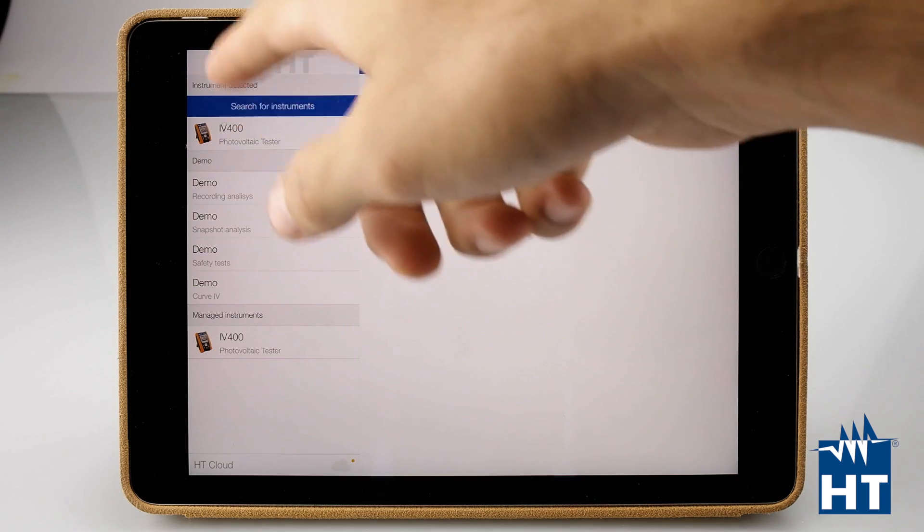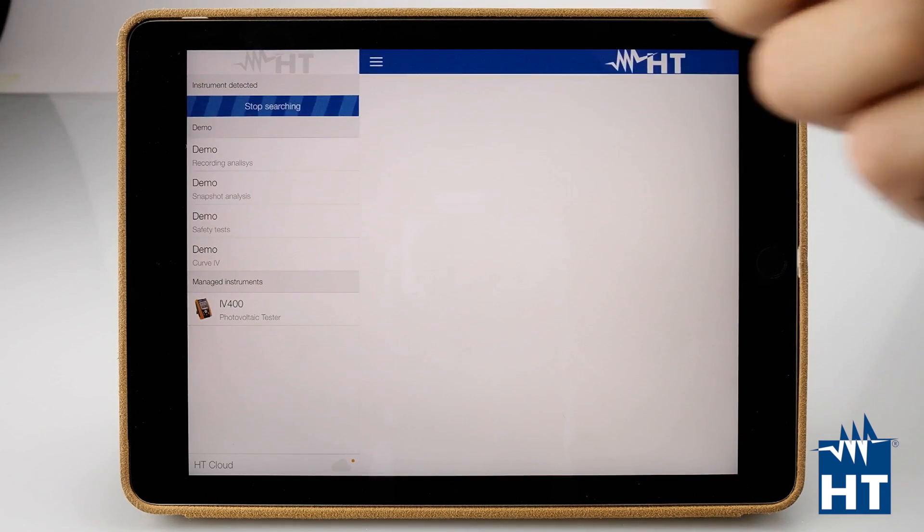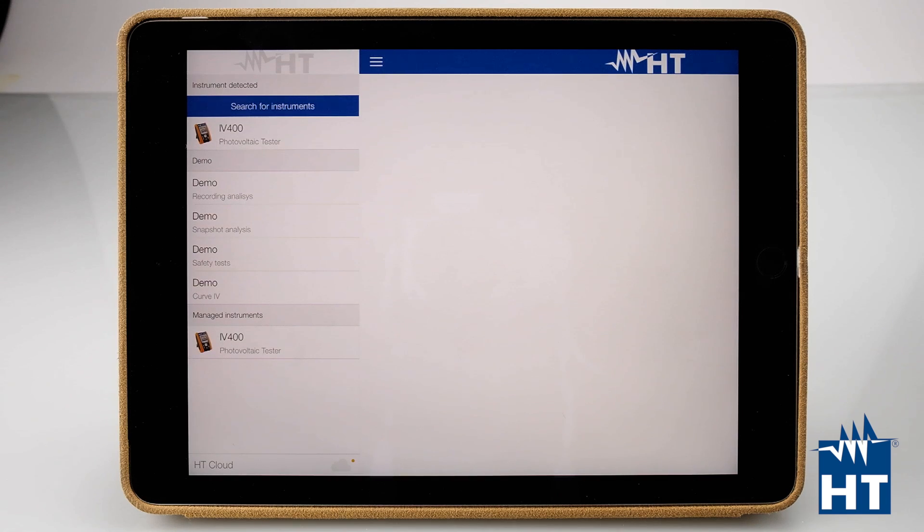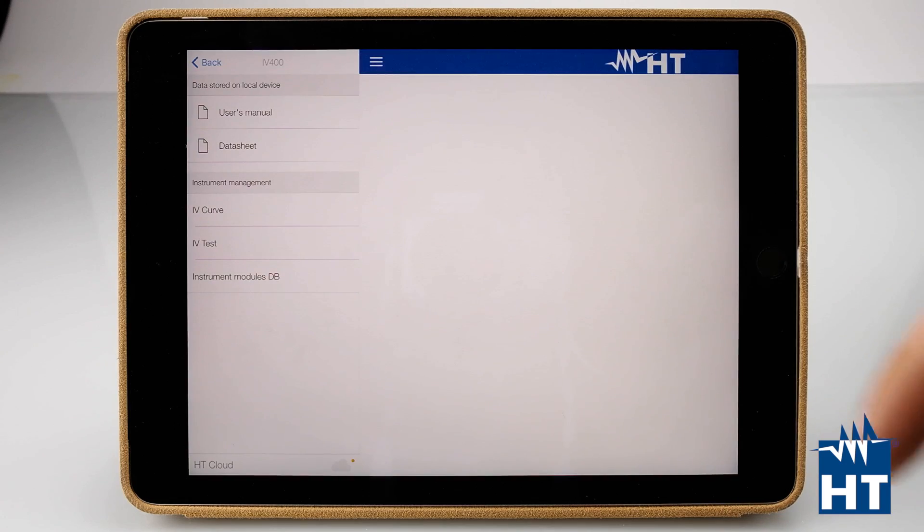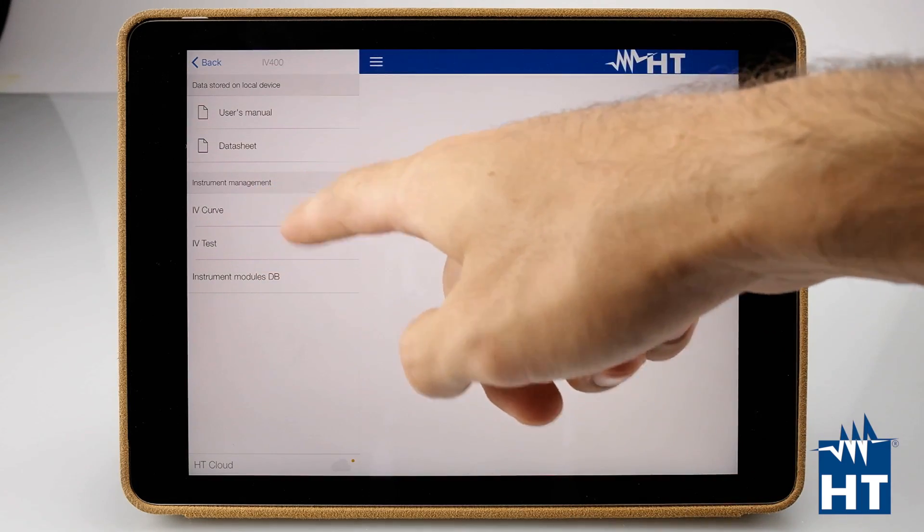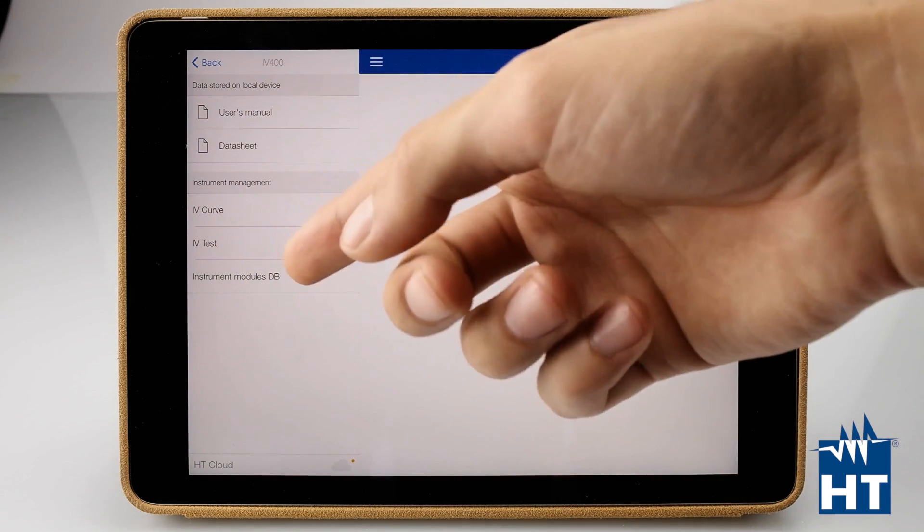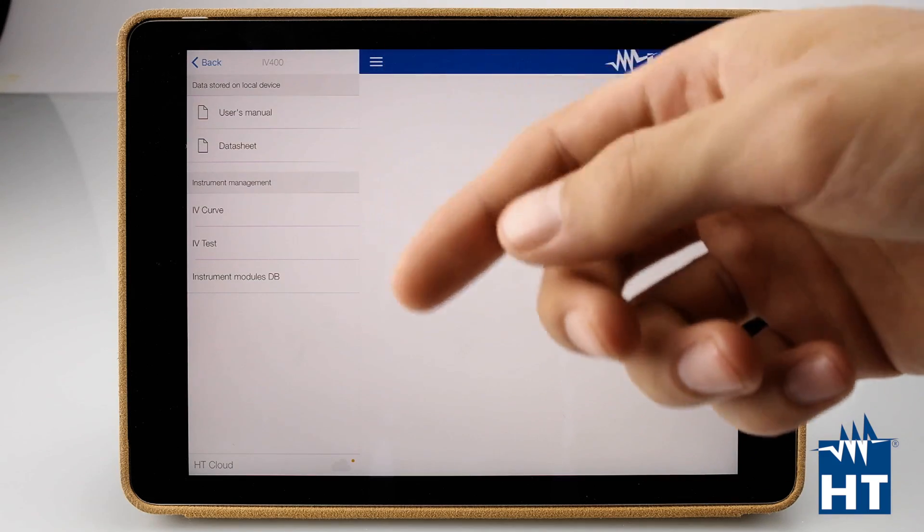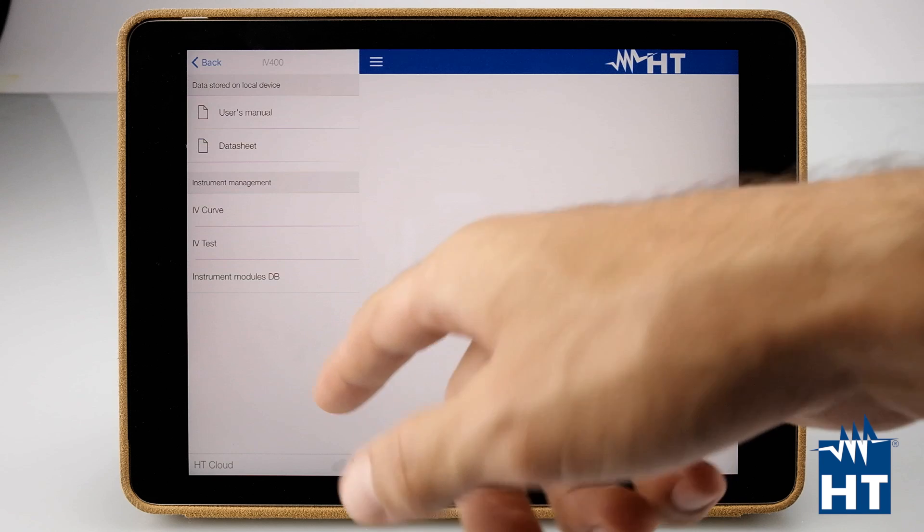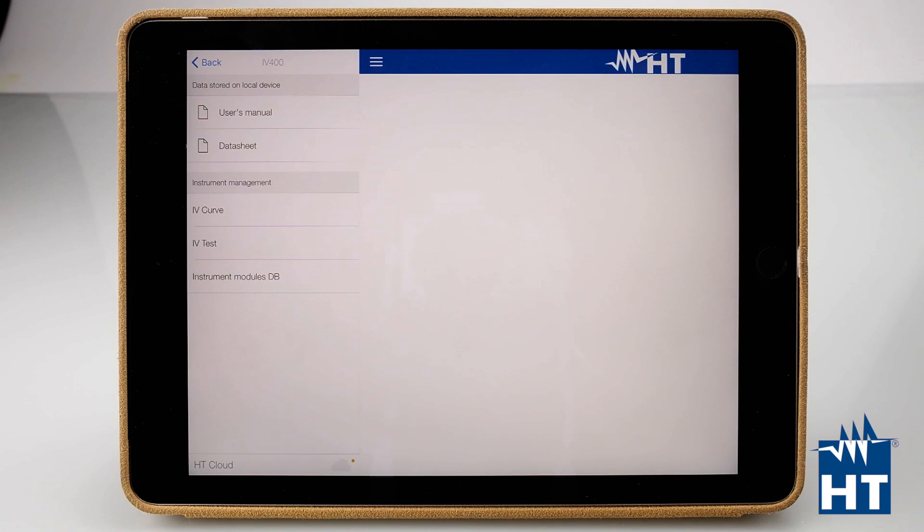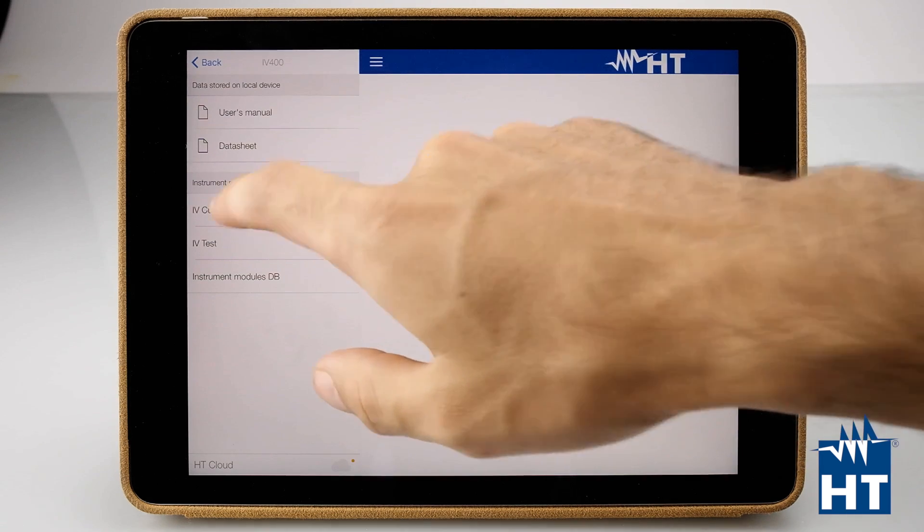Instruments detected. We just press here to find the instruments, live instruments. And then we can find the IV curve test, IV test, which is a fast check of VOC and ISC. And then the instrument modules, because we can manage even the database of the modules directly from the iPad.